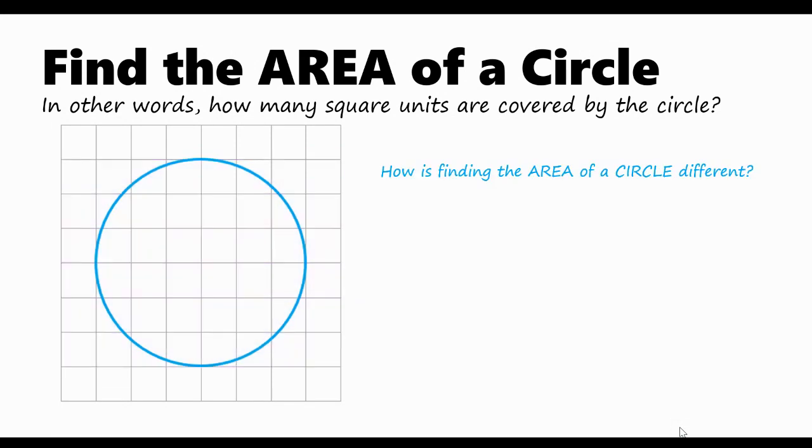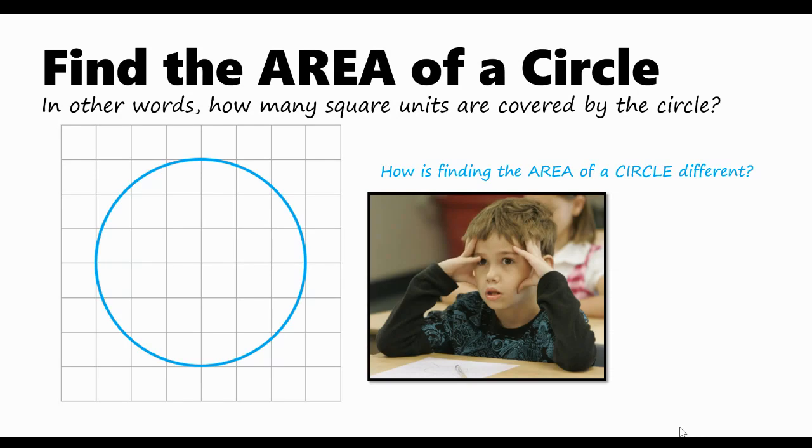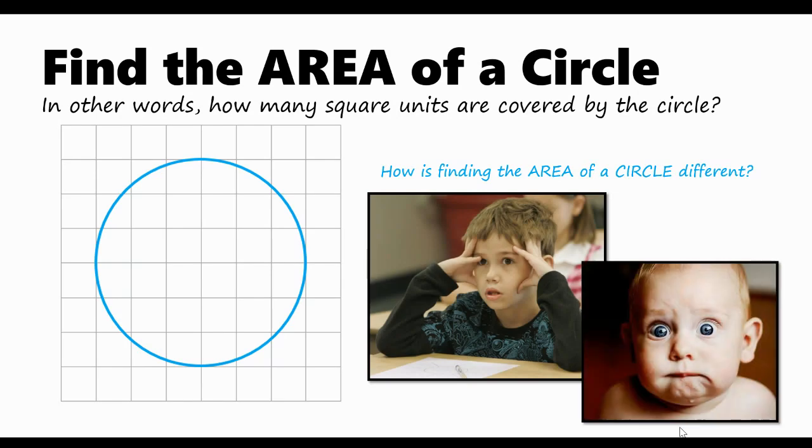So how is finding the area of a circle different? And why does it leave many of us feeling like this, or maybe even like this?